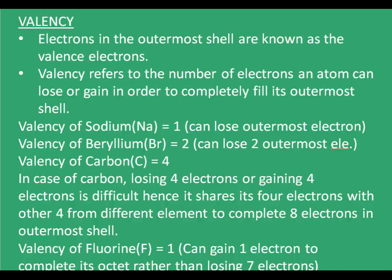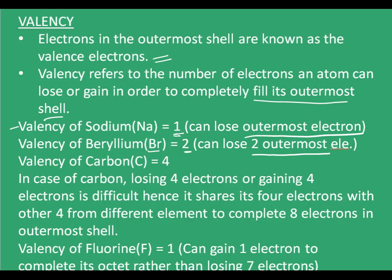Now let's look at an important term: valency. Electrons in the outermost shell are known as valence electrons. Valency refers to the number of electrons an atom can lose or gain in order to completely fill its outermost shell. In the case of sodium, the valency is 1 — it can lose its outermost electron. The valency of beryllium is 2 — it can lose 2 outermost electrons. Valency of carbon is 4, but carbon is different: losing or gaining 4 electrons is difficult, so it shares its 4 electrons with 4 electrons from different elements to complete 8 electrons in the outermost shell. Similarly, fluorine has a valency of 1 — it can gain 1 electron to complete its octet, rather than losing 7 electrons, which is not feasible.